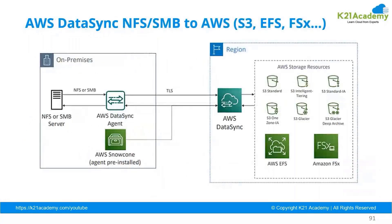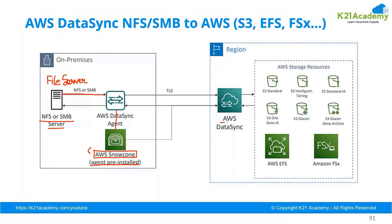As you can see in this diagram, it explains it very well. You have a DataSync agent sitting on your NFS or SMB server — essentially your file server. If there is a file server from where data is required to be migrated to the cloud, then this agent — which is nothing but an AWS Snow Cone with an agent pre-installed on it — will be connected into your network. File transfers happen over NFS or SMB between this Snow Cone and the AWS DataSync service over an encrypted TLS channel.